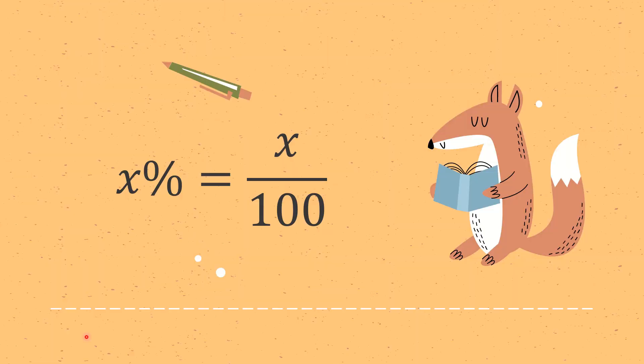Back in primary school, we learned that x% is equal to x over 100. With this understanding of the equivalence, it helps us to convert a percentage to a fraction as well as a decimal.